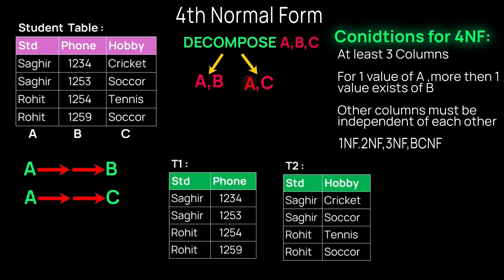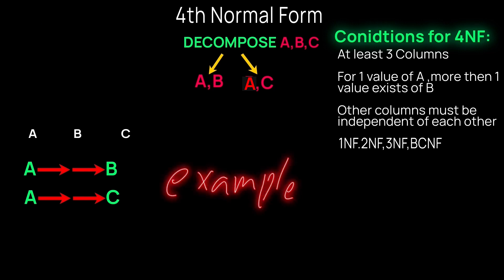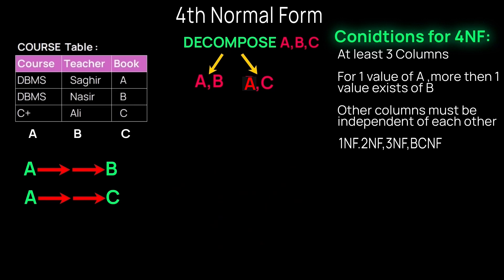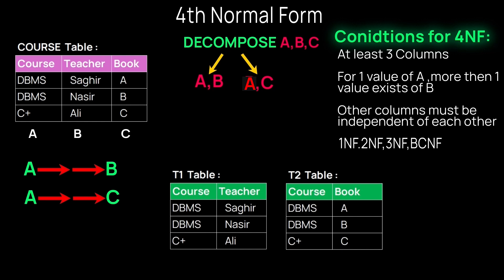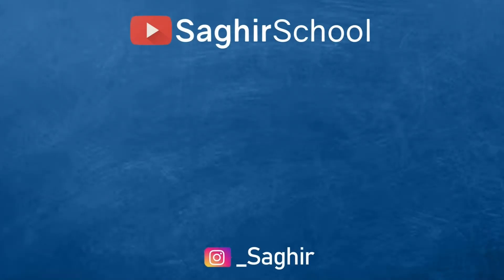Example number two: we have a course table where Database Management System is taught by multiple teachers, and each teacher uses a different textbook for the course. So teacher and book are multivalued attributes. We decompose the table the same way — the non-multivalued attribute on the left and the multivalued attributes, teacher and book, each in their own table on the right. We have achieved fourth normal form.